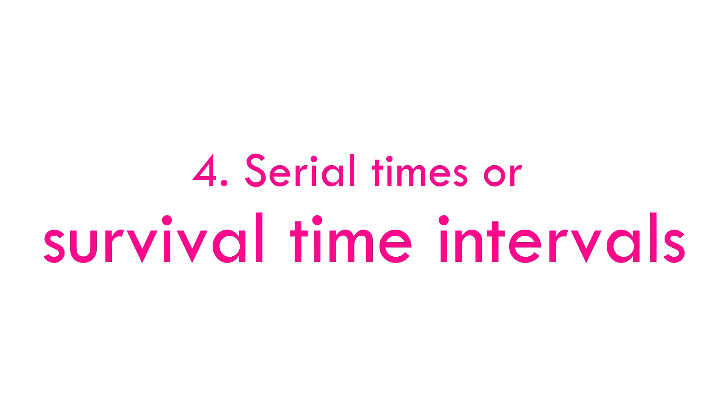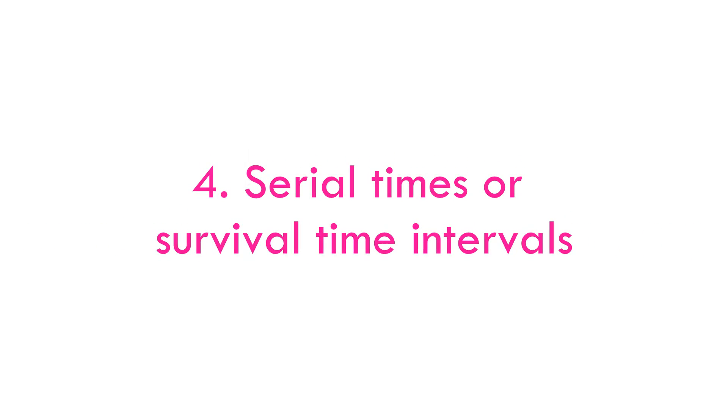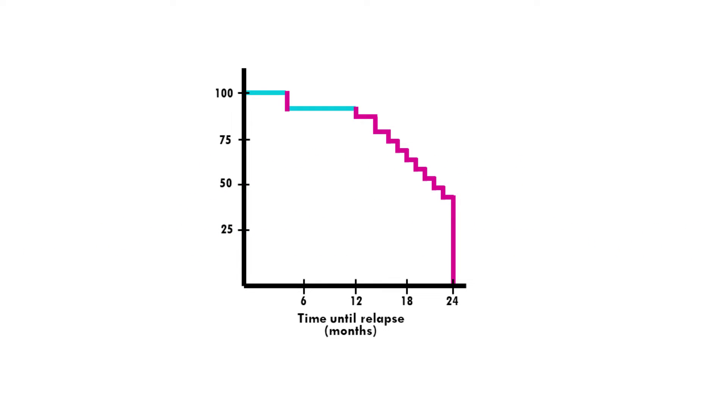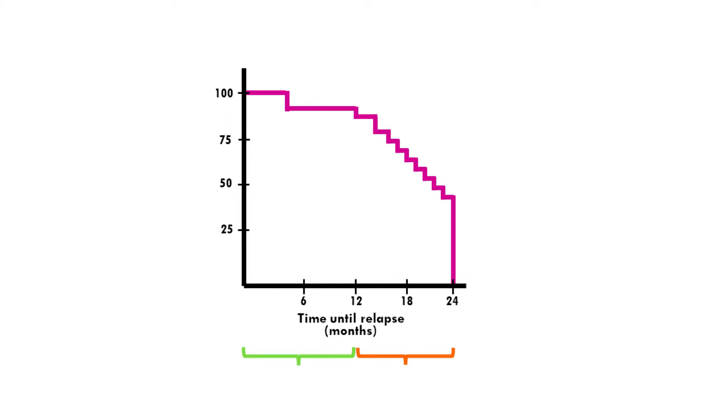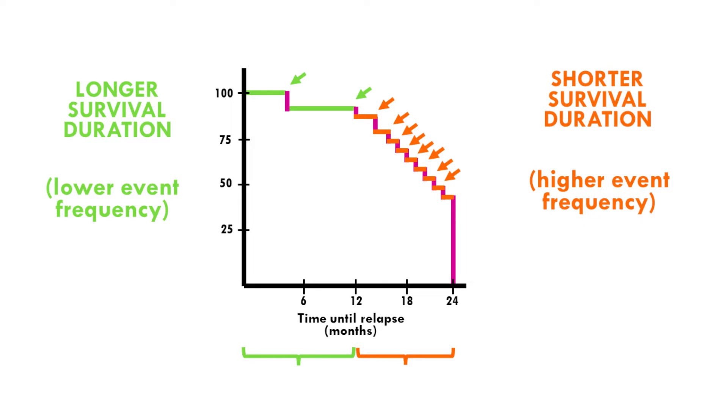The lengths of the horizontal lines along the x-axis represent the survival duration for that interval. It's important to know that survival time intervals are defined by the event happening. So in this case, the relapse of a patient marks the end of an interval. Every time a patient relapses, we drop down a level.